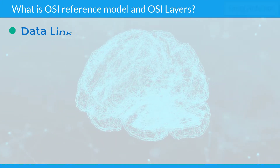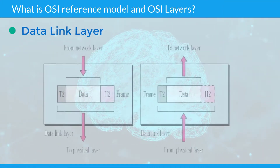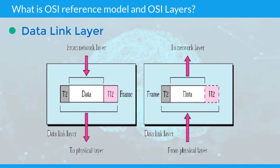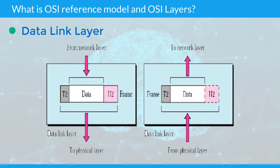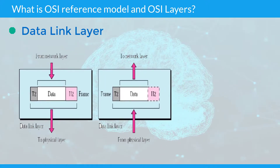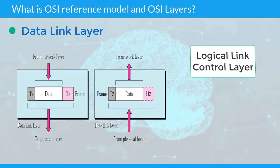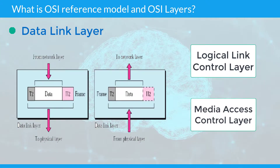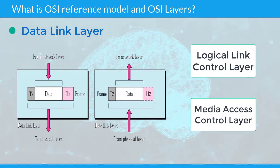Data link layer: This layer sets up links across the physical network, putting packets into network frames. This layer has two sub-layers: the logical link control layer and the media access control layer. Ethernet is the main data link layer in use.